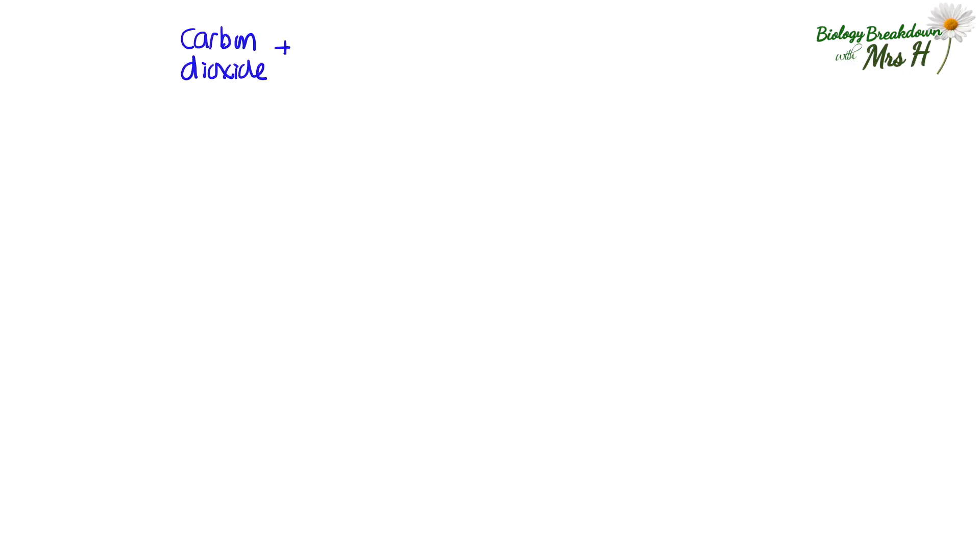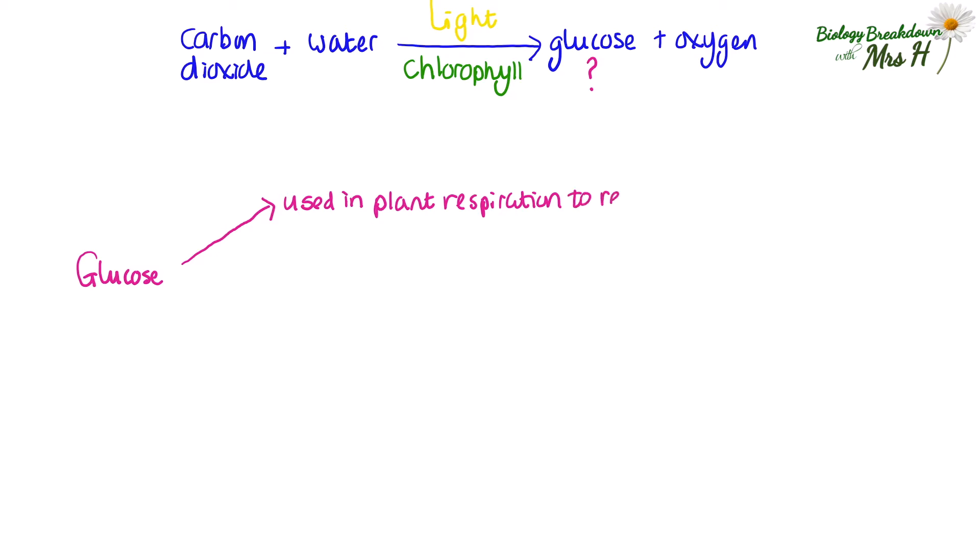Let's look at the photosynthesis equation again. Excess oxygen will be released as a gas into the air, but what happens to the glucose? Well, a few things can happen. The glucose can be used in plant respiration along with the oxygen the plant has also just made. And respiration releases energy, and this energy can be used for growth, so building bigger molecules from smaller ones.